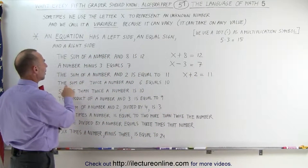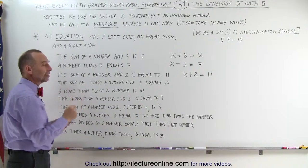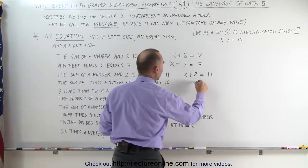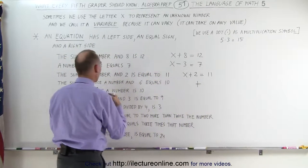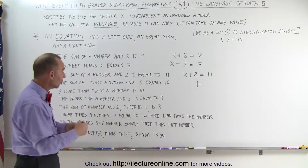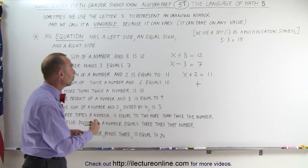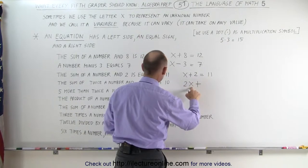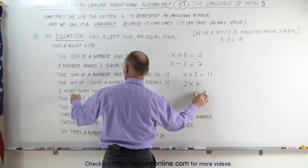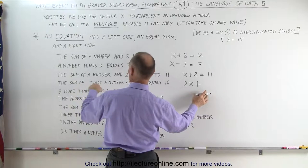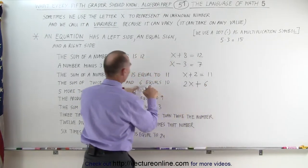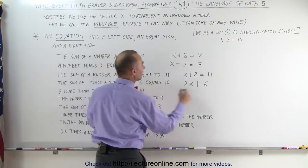Here it says: the sum of twice a number and 6. We're going to have an addition. Twice the unknown number is 2x — 2x means 2 times the unknown number. Because we have a sum, the sum of twice a number and 6, we add 6 to that, and they tell us that it equals 10: 2x + 6 = 10.